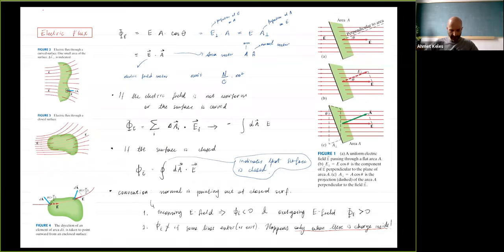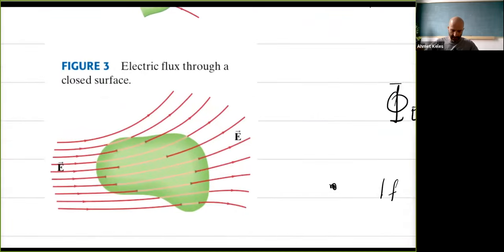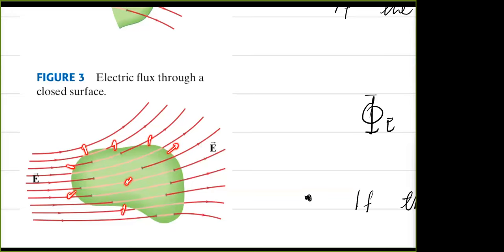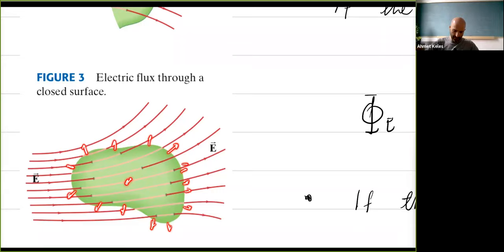Here is the convention: when we have a closed surface, the normal vector always points outward. For example, for a closed surface there is a sense of inside and outside, and I define the normal vector pointing outward everywhere — it always points from inside to outside.